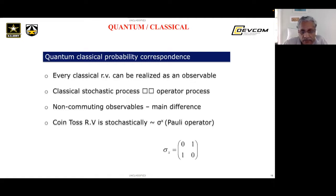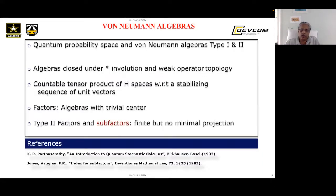These observables are non-commuting operators. Von Neumann and Murray classified three types of von Neumann algebras: type 1, 2, and 3. Type 3 is not widely studied; type 1 is studied most. Type 2 algebras are gaining importance, especially in topological quantum computation and topological quantum field theory. A factor is an algebra with trivial center; type 2 factors are finite but have no minimal projection.